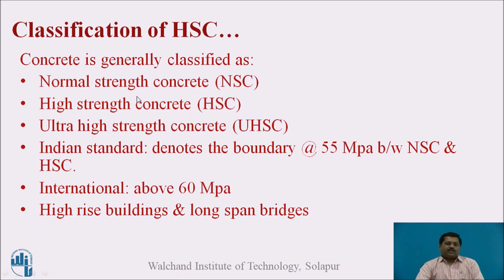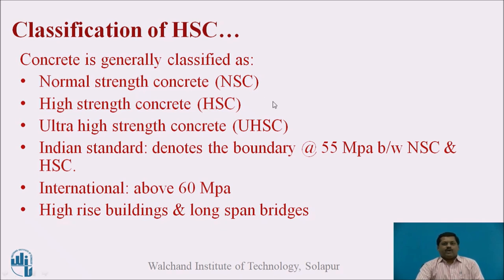High-strength concrete is generally classified alongside normal-strength and standard-grade concrete. Compressive strength of 20 to 30 MPa is normal strength concrete; 30 to 55 MPa is standard grade concrete as per IS 456. High-strength concrete has compressive strength more than 55 MPa. The boundary between normal and high-strength concrete is 55 MPa.